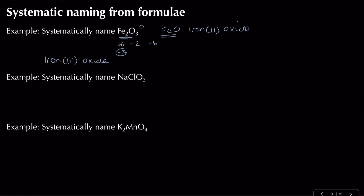Looking at sodium chlorate: it contains a sodium ion and a chlorate ion. Chlorine combined with oxygen creates a negative ion called an oxyanion, and the name normally ends in '-ate'. So chlorine gives chlorate, iodine gives iodate, bromine gives bromate.